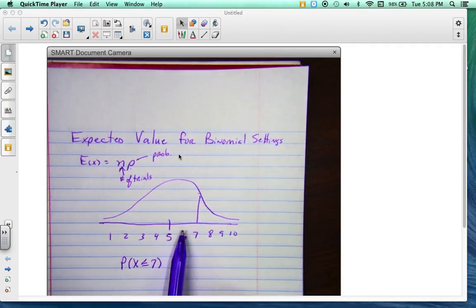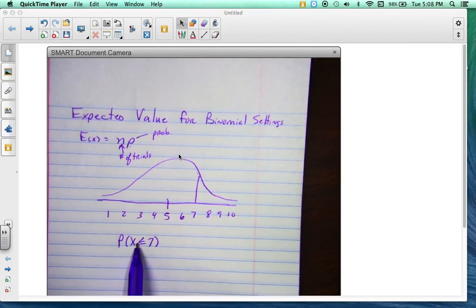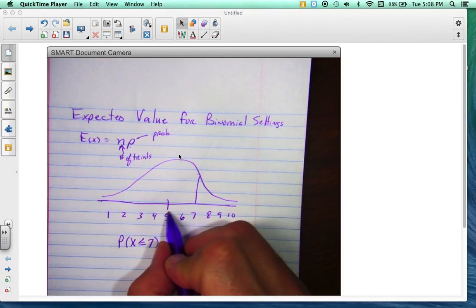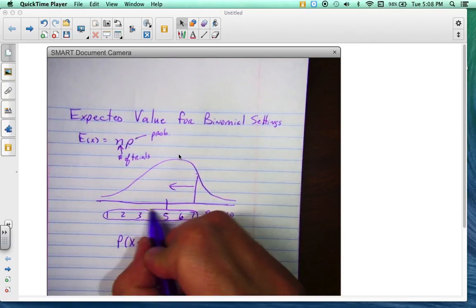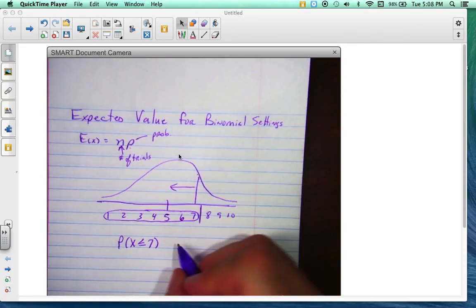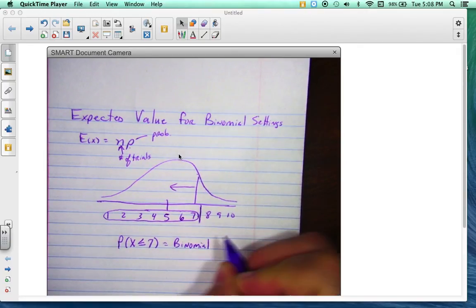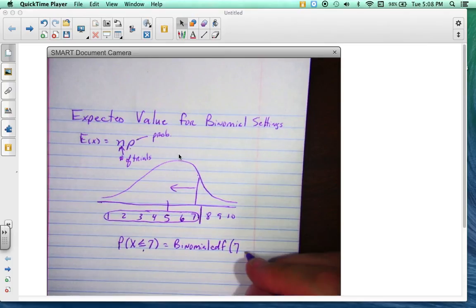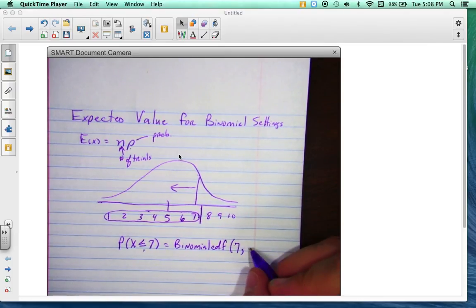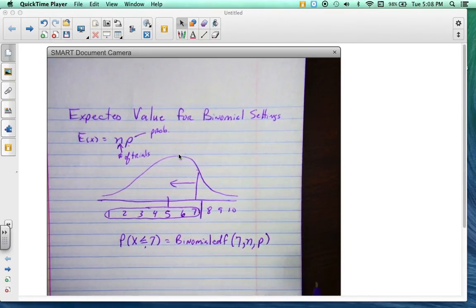Now also, remember we talked about this today, so binomial CDF. Let's say I want to find out the probability that x is less than 7. Well, in this case, since I know x is less than 7, let's find the probability to the left. So I want all these numbers right here. That means I want to do binomial CDF, and you always choose this number. So I want 7 since it's included, comma, whatever n is, and then of course your probability. And that's what you put in the calculator.